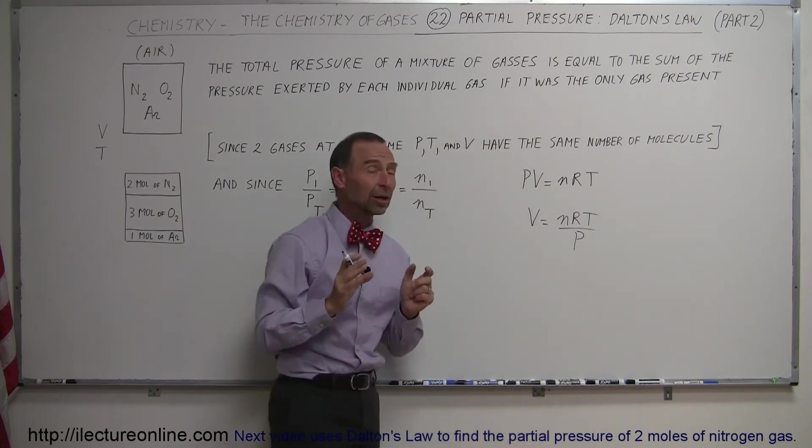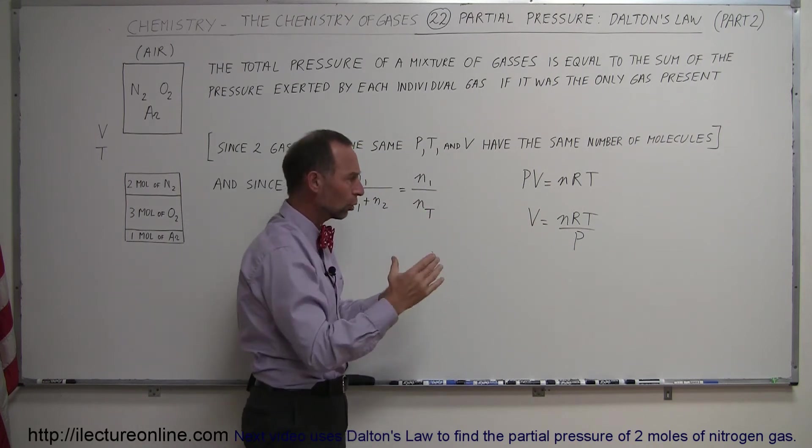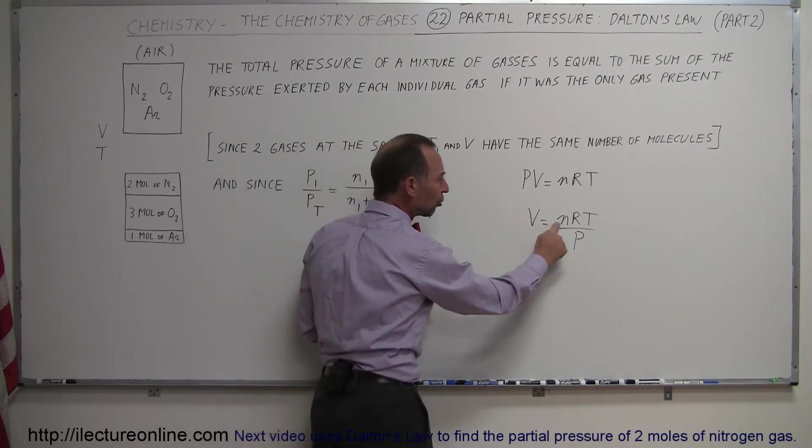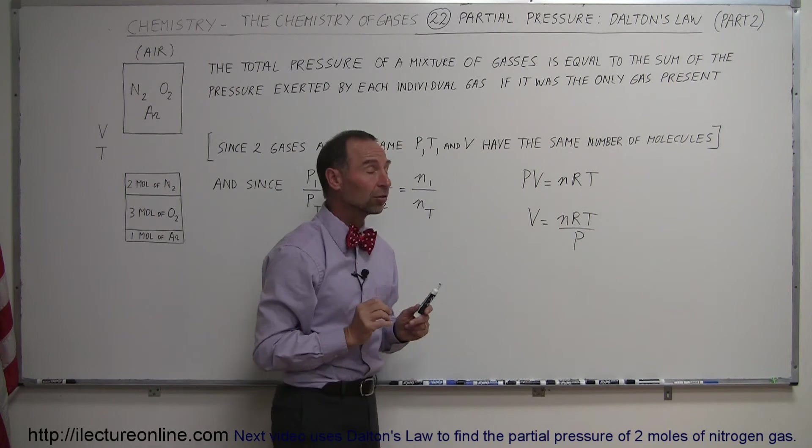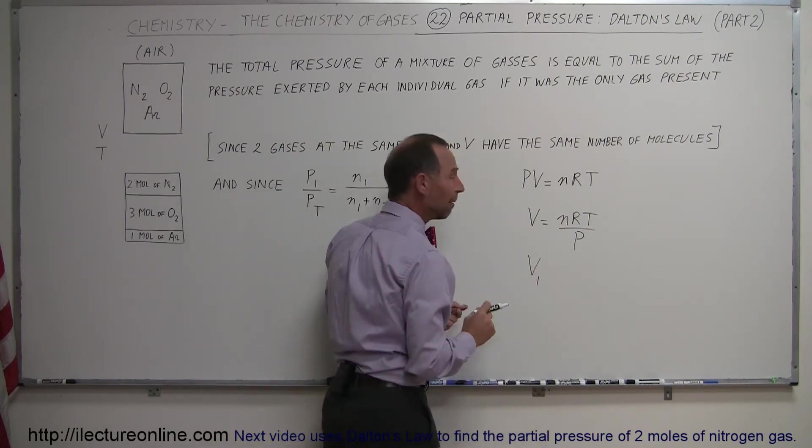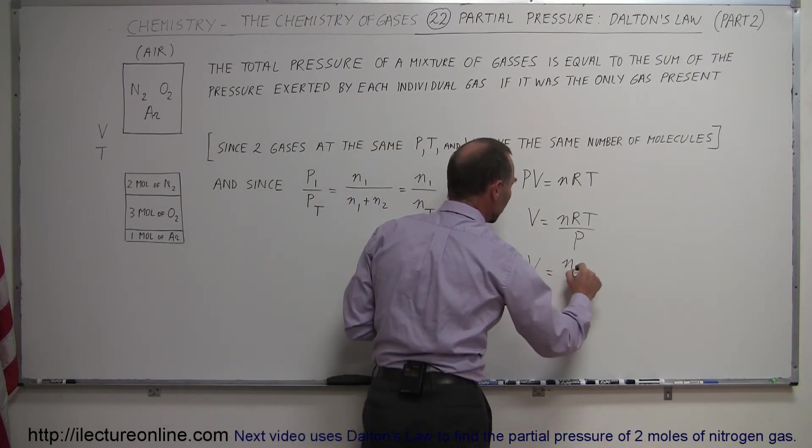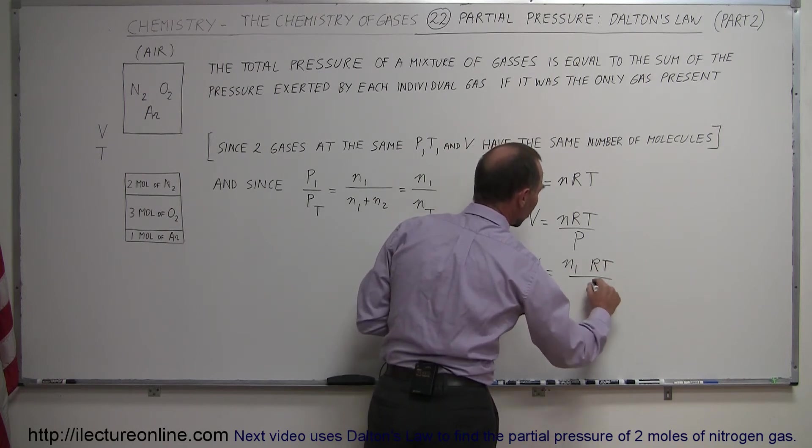So if we now take a look at the amount of volume that any one of the components contributes to the total, it will be directly proportional to the number of moles in that gas. So we can therefore say that the volume contributed by one of the gases, let's say gas one, is equal to the number of moles of gas one times RT divided by the total pressure.